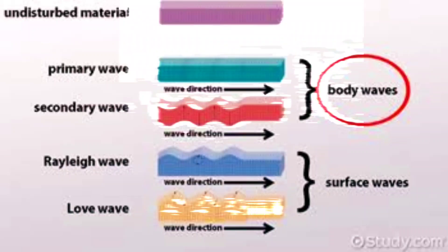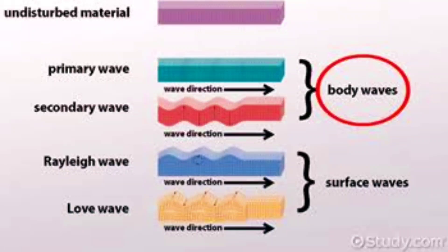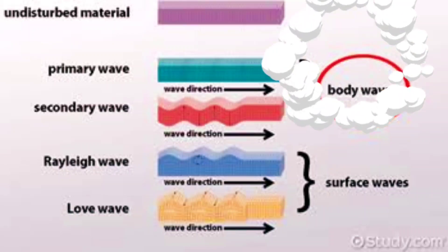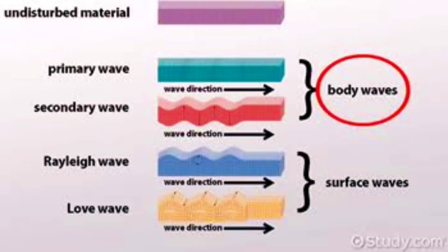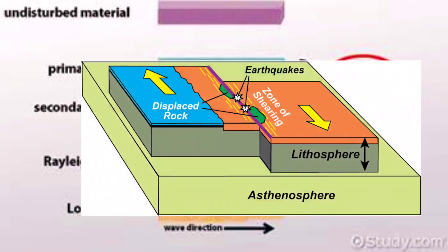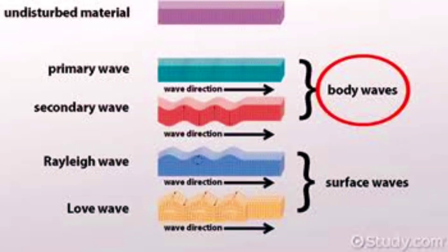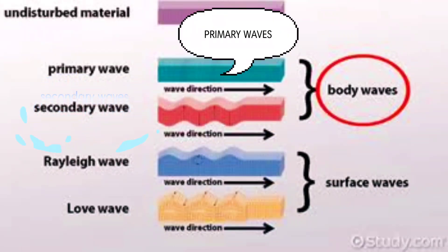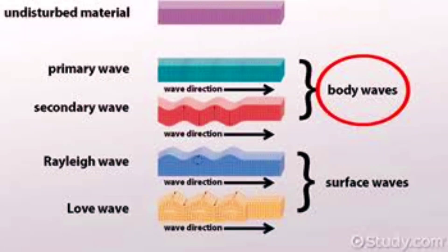The energy is transmitted through waves of two types: body waves and surface waves. Body waves originate from the plate margins and are divided into primary waves (P waves) and secondary waves. P waves travel very fast and can pass through solids, liquids, and gases. They are the first to reach the surface and move parallel to the vibration direction.